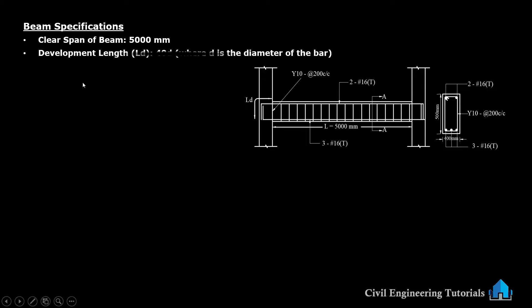Next, development length LD. We are assuming here 40D, where D is the diameter of the bar. This is development length, 40D. Clear cover on any ends: 30 mm. You can see this is the clear cover — all sides, 30 mm clear cover.